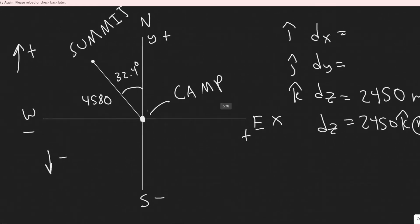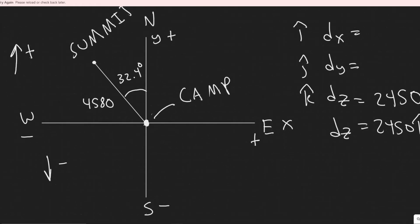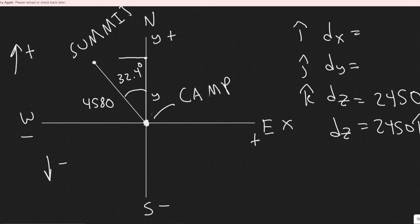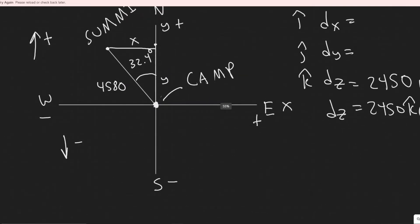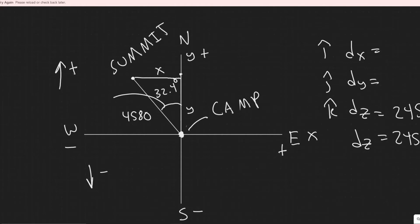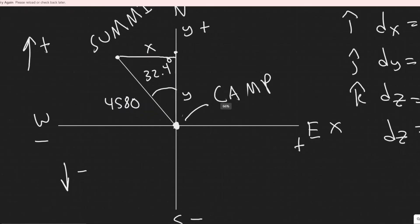Now let's look at the y component. Imagine it in our plane — the y component is the distance in the y direction from camp to the summit's horizontal position. The x component runs along the x-axis. We need to find those distances. We're told the horizontal distance is 4,580 meters at 32.4 degrees west of north, so we'll use trigonometry.